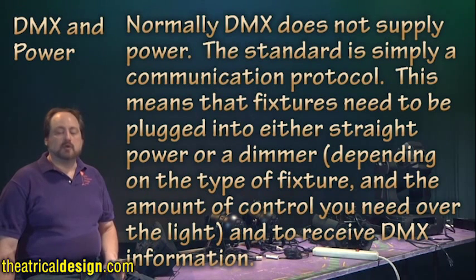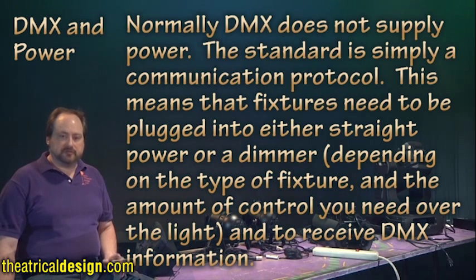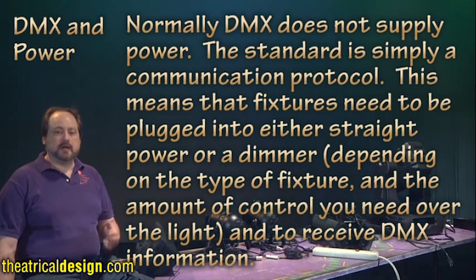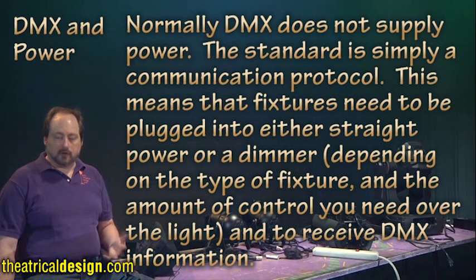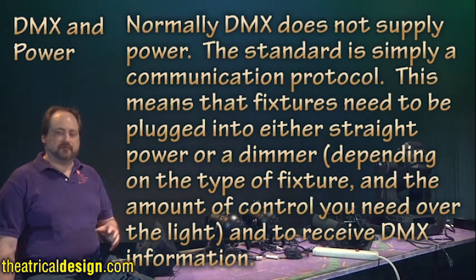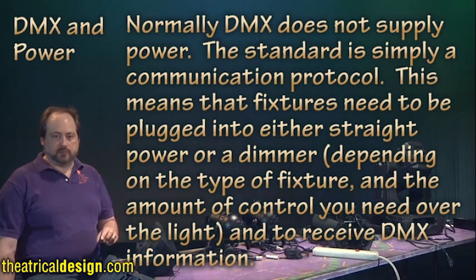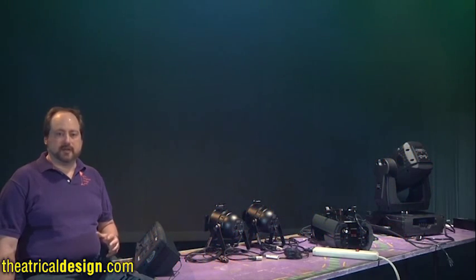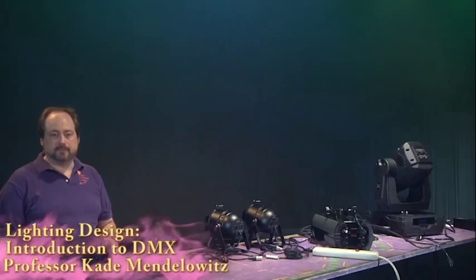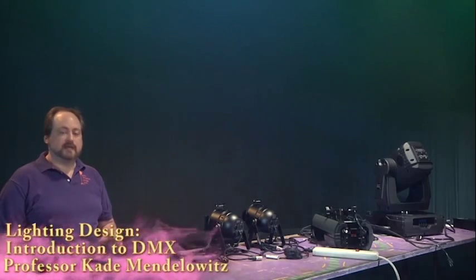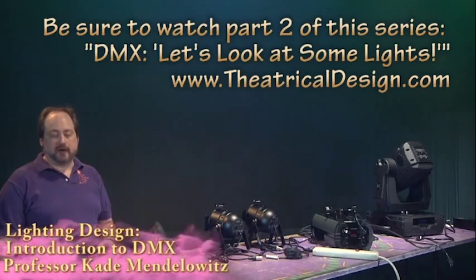DMX and power: Normally, DMX does not supply power — the standard is simply a communication protocol. This means that fixtures need to be plugged into either straight power or a dimmer, depending on the type of fixture and the amount of control you need over the light, and separately receive DMX information. In the case of color scrollers, projector dowsers, and certain other effects fixtures, a 4-pin DMX cable is used to supply both the control information on two of the pins and low voltage on the other two pins. Be careful to avoid sending voltage through a DMX cable to a fixture that doesn't require it, as supplying electricity when not requested can damage the fixture and possibly cause a fire or other emergency.